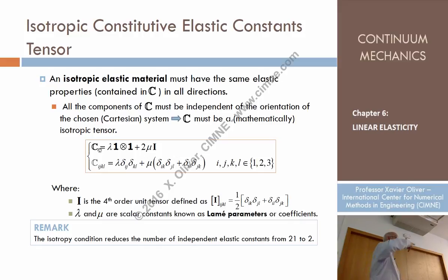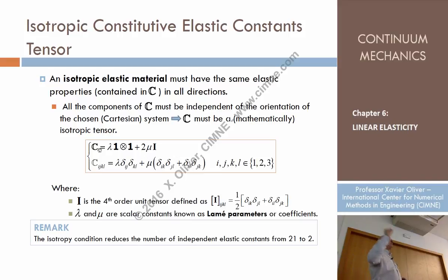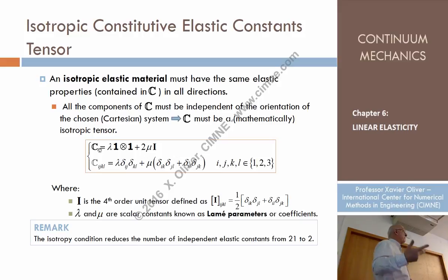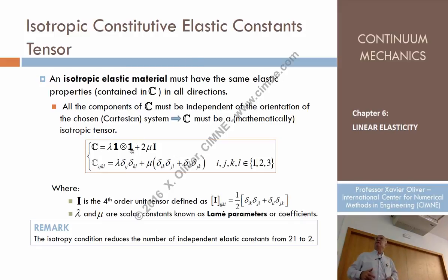The identity tensor. The identity tensor is such that when I change the basis, the components are still ones on the diagonal and zeros elsewhere. And of course, if the identity tensor is isotropic, any scalar times the identity tensor is also isotropic — so a scalar multiplied by the identity tensor is isotropic.